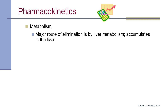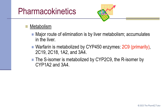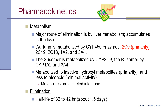The major route of elimination is by liver metabolism, and warfarin accumulates in the liver. It is metabolized by cytochrome P450 enzymes — primarily CYP2C9, but also CYP2C19, 2C18, 1A2, and 3A4. The S isomer is metabolized by CYP2C9, while the R isomer is metabolized by CYP1A2 and 3A4. It is metabolized primarily to inactive hydroxyl metabolites and, to a lesser extent, alcohols. These metabolites have minimal activity and are excreted in the urine. The half-life of warfarin is 36 to 42 hours, about 1.5 days.